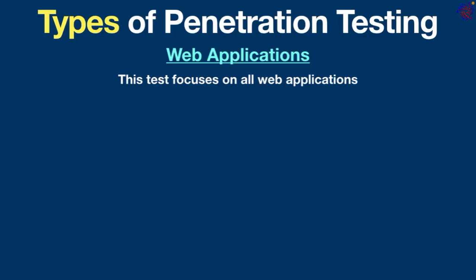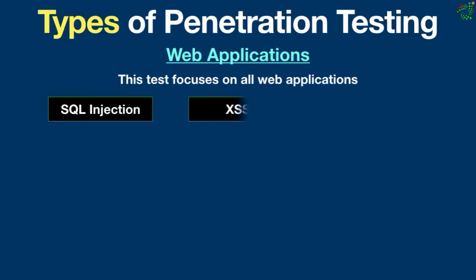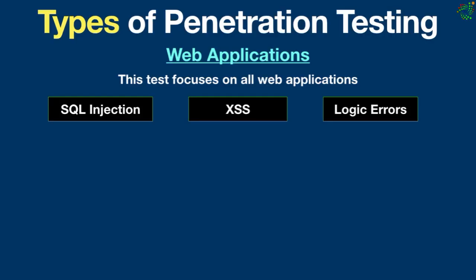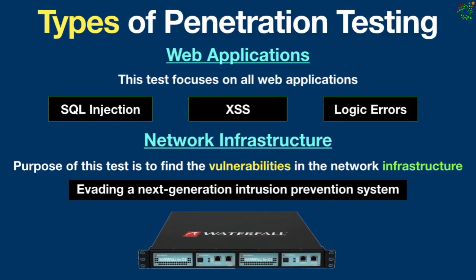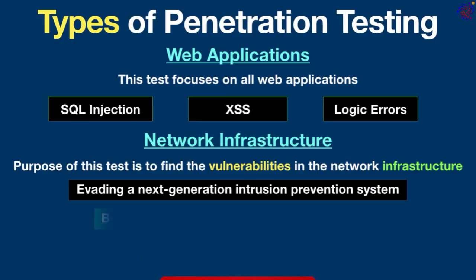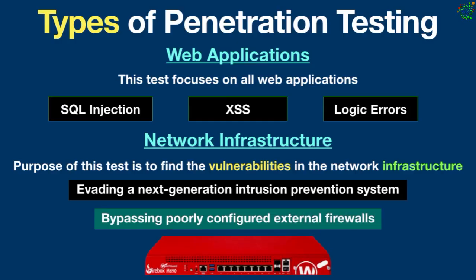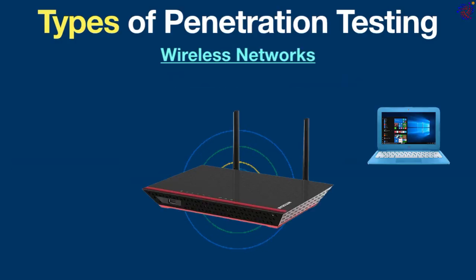Types of penetration testing include web application testing, which focuses on testing websites and web applications for flaws like SQL injection, cross-site scripting, and logic errors. A web application test is much more detailed, intense, and time consuming. Network infrastructure testing aims to find vulnerabilities in the network infrastructure and is the most common type of pen test. It can focus on internal infrastructure, such as evading a next-generation intrusion prevention system, or on the network's external infrastructure, such as bypassing poorly configured external firewalls.